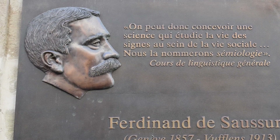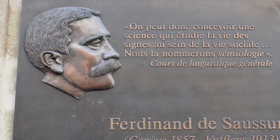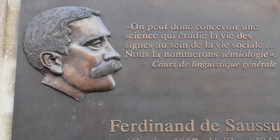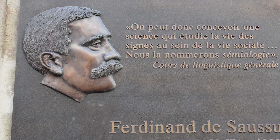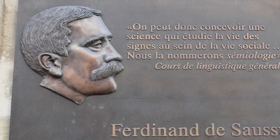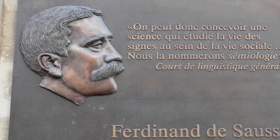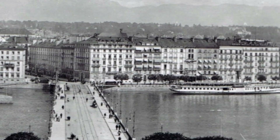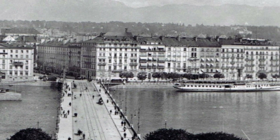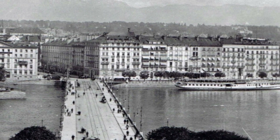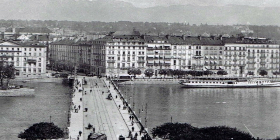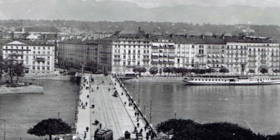Saussure's background was in comparative and historical linguistics — he was an expert in the study of Indo-European languages. In a series of courses that he gave at the University of Geneva, Saussure outlined his thoughts on creating a new field of study that would be a science of language.